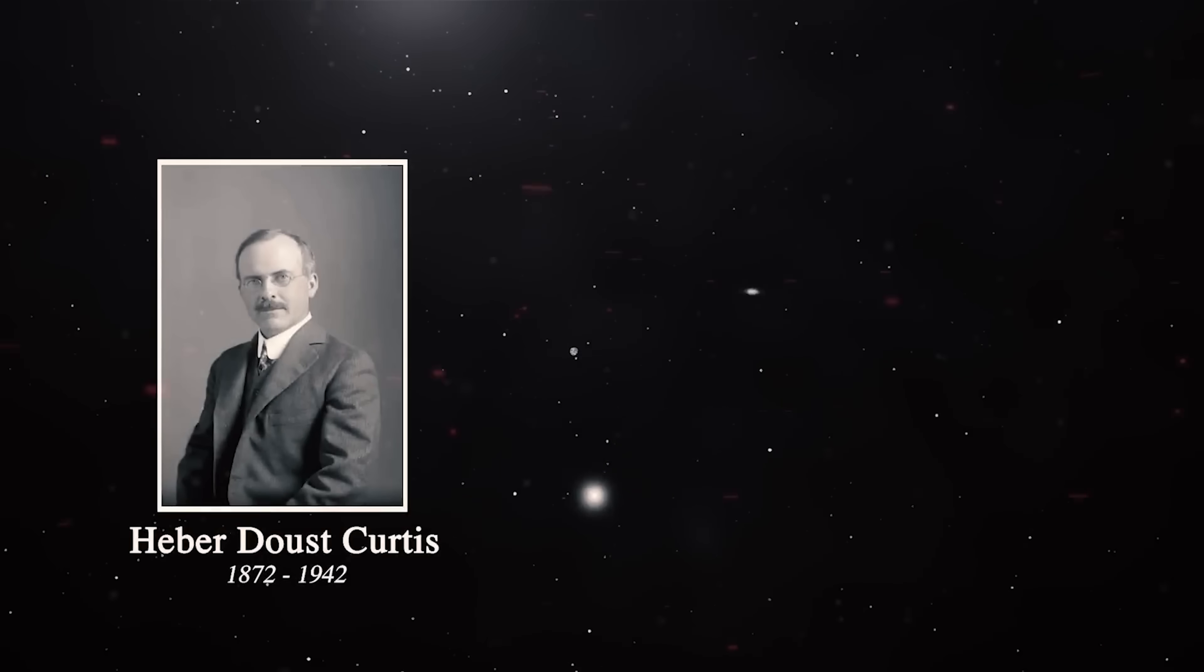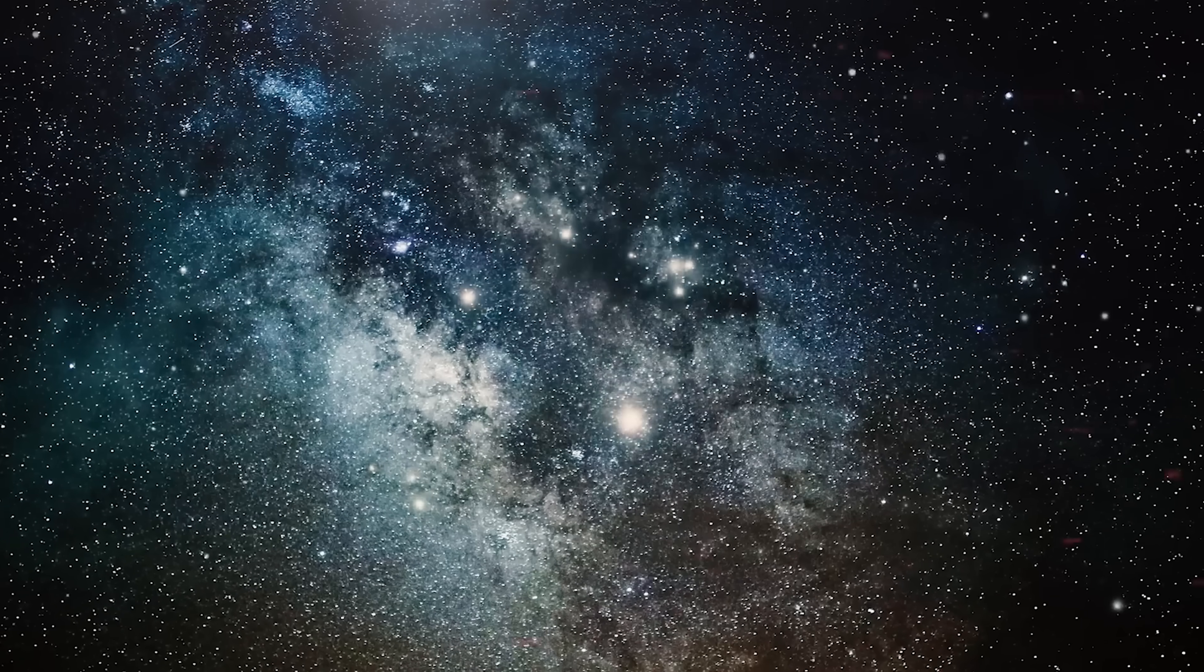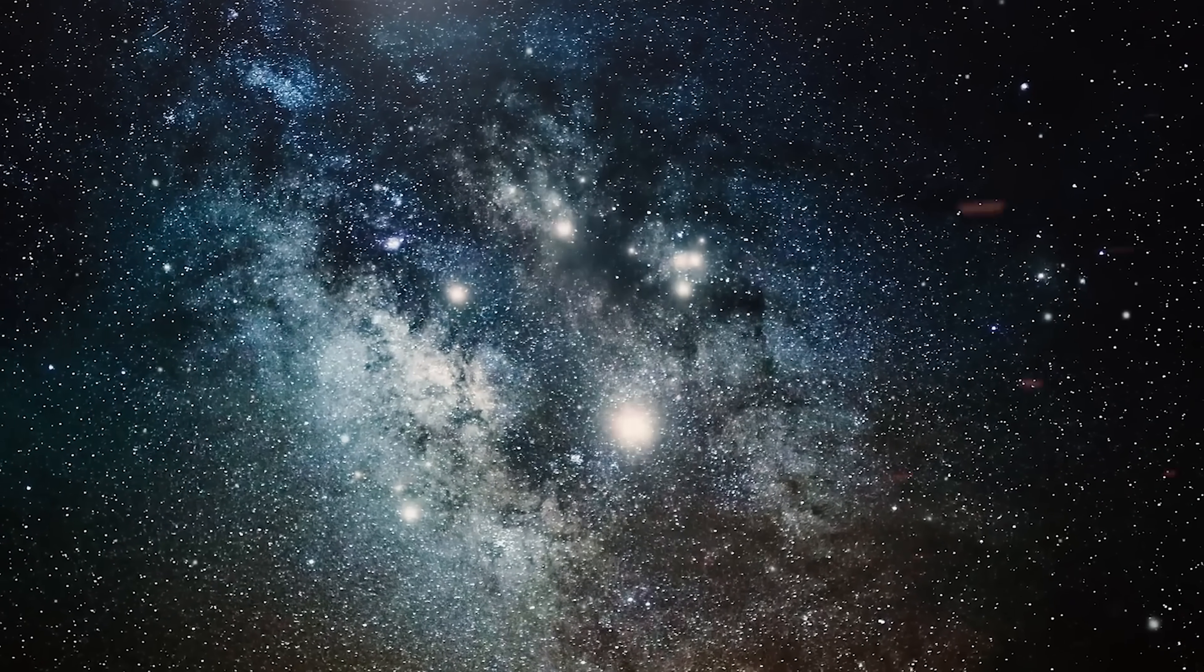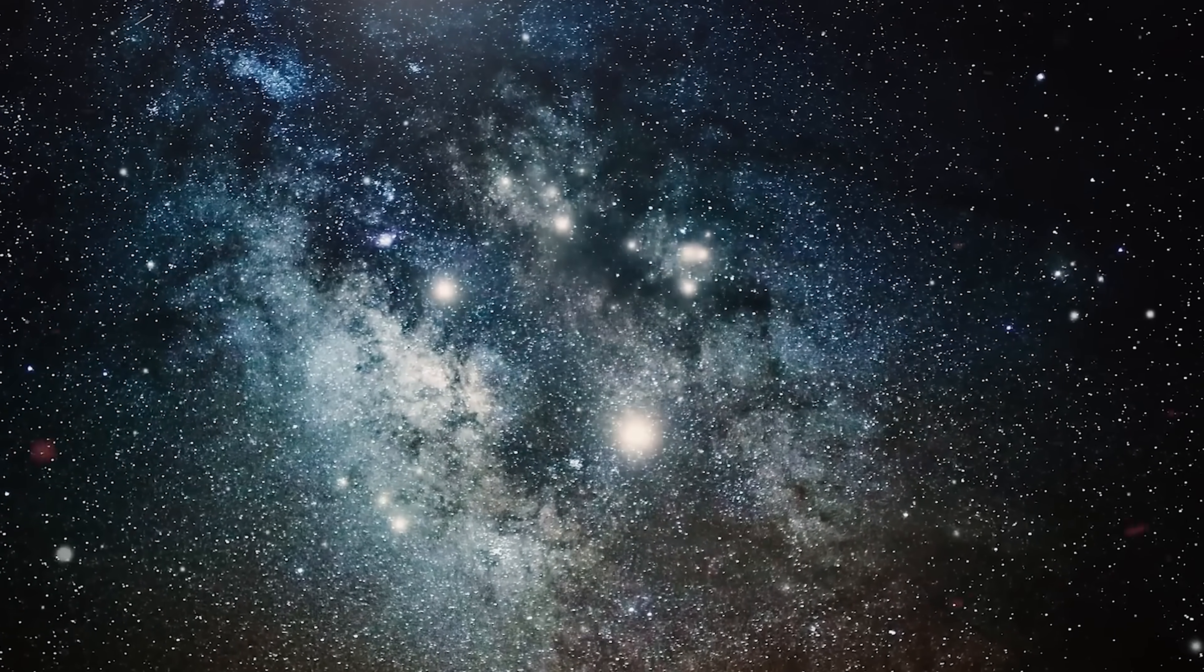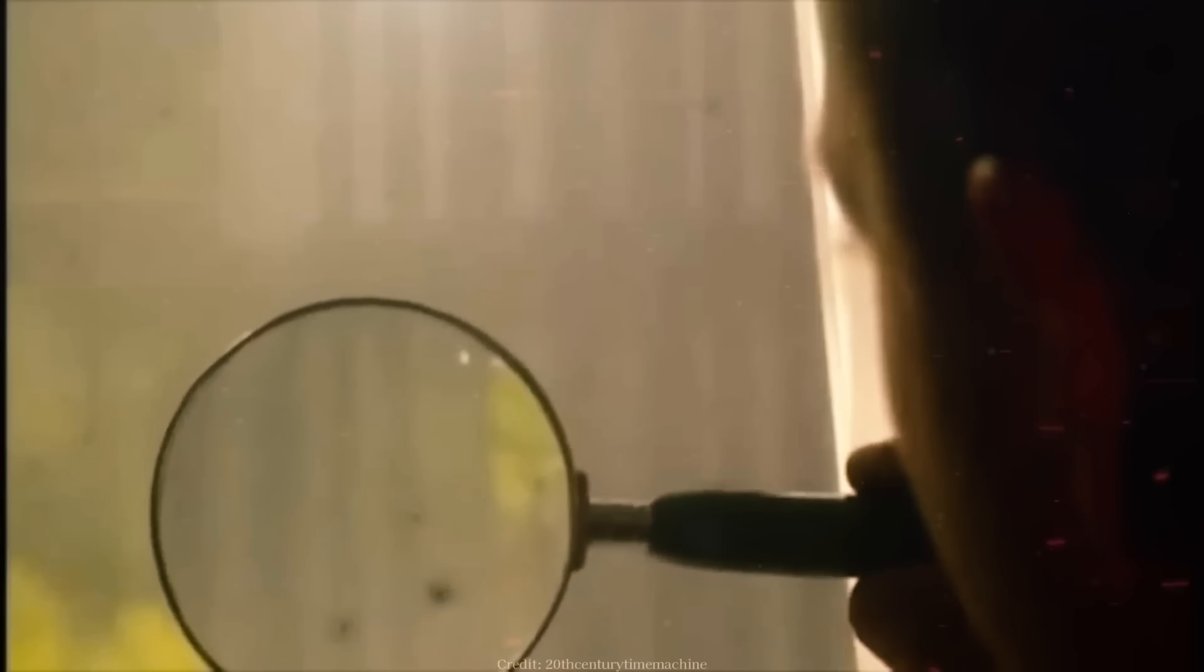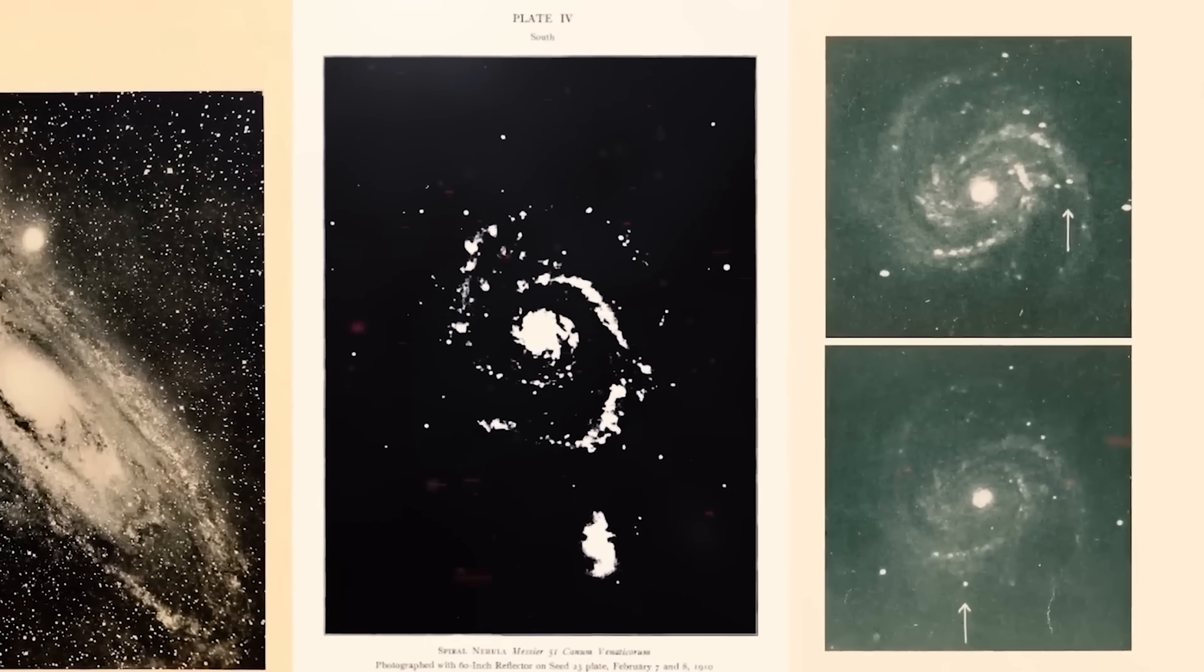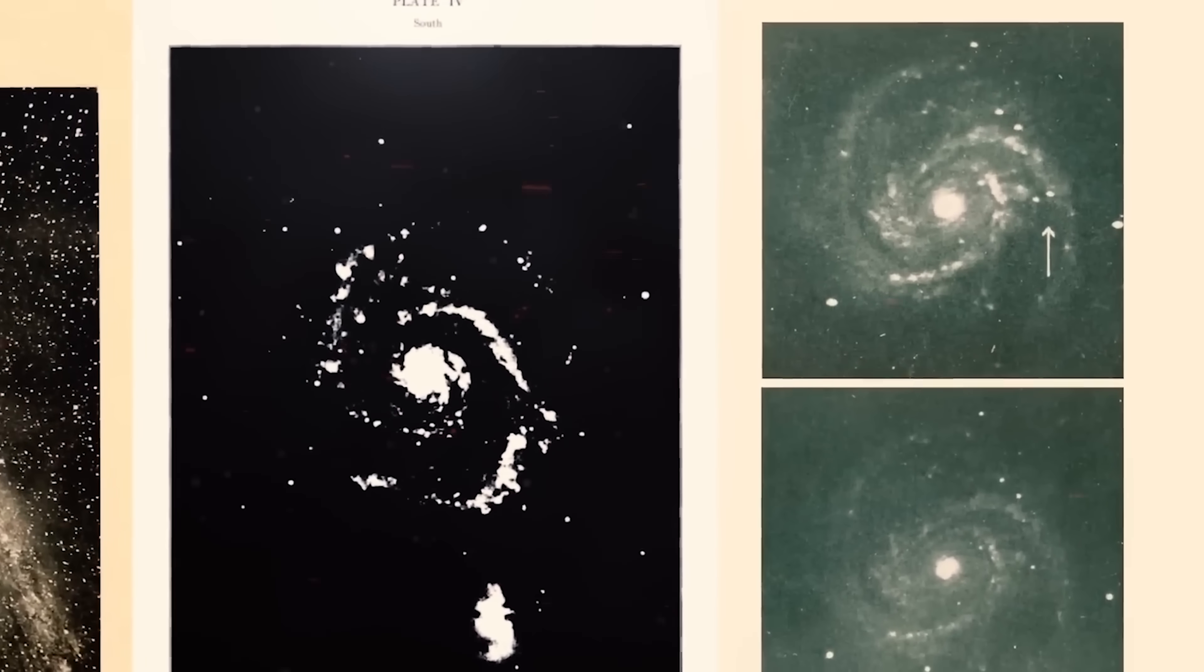Then, in 1917, Heber Curtis spotted a sudden flare inside what people then called the Andromeda Nebula. It looked like a brand new star bursting to life. Novae usually brighten fast and fade slowly, so the event caught his attention. Driven by curiosity, he dug through old photographic plates, hoping to find more clues. To his surprise, he uncovered 11 additional novae in the same region.